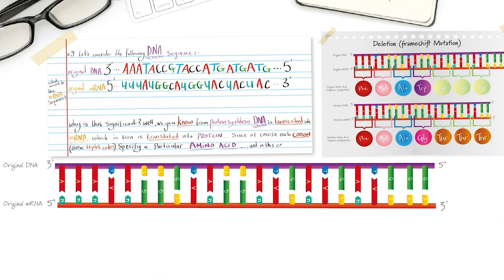And in this case, we would have the following polypeptide chain, where the messenger RNA codon uracil, uracil, uracil specifies for the amino acid phenylalanine, AUG codes for methionine,